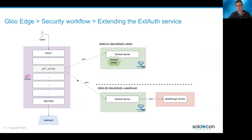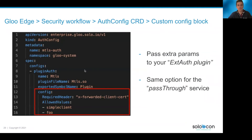In the pass-through case, the authorization request will go through the ext-auth server before reaching your own authentication or authorization service. In any case, you can configure your plugin using the AuthConfig custom resource, and underneath the config attribute you can define a custom structure that will be sent to your plugin — that's a way for users to configure your plugin the way they want.